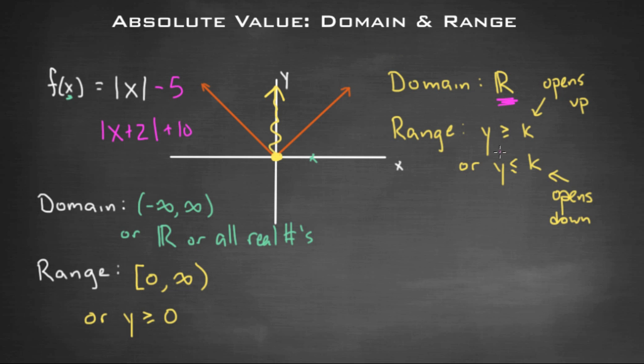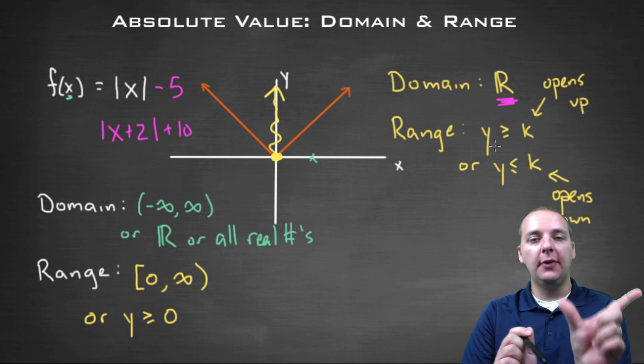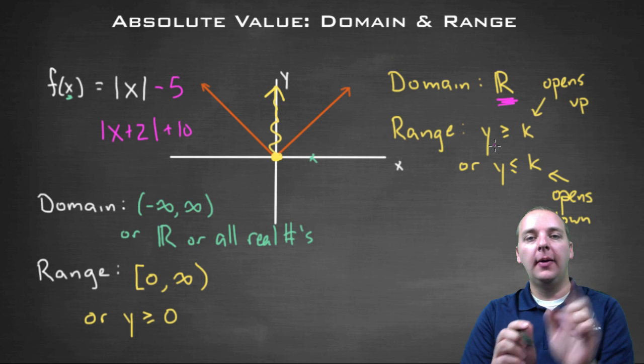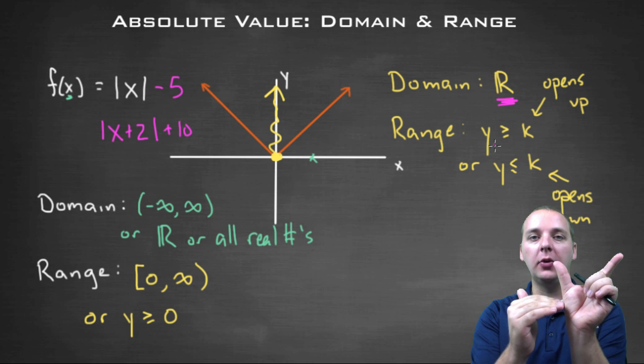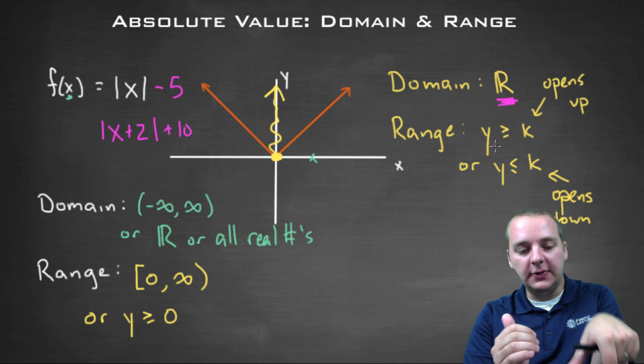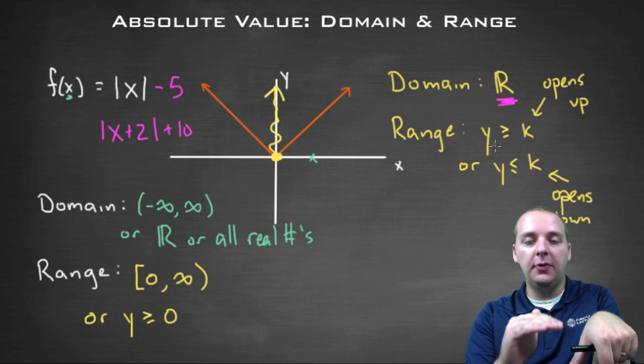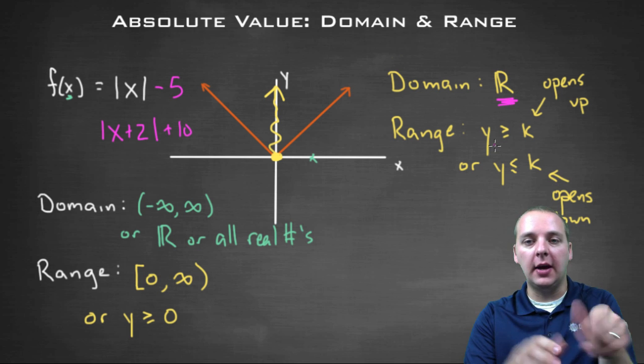Now the thing that will change though, is the range. The range depends on where the vertex is. If your graph has been moved up, then the y values will be from that new vertex's y value up, or if it's faced downward, it'll be from the vertex's y value downward.